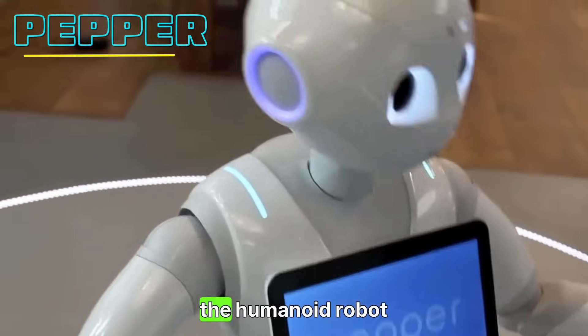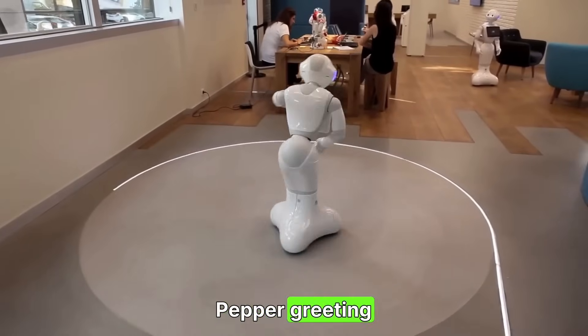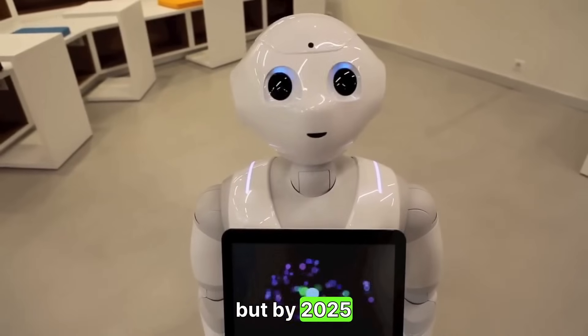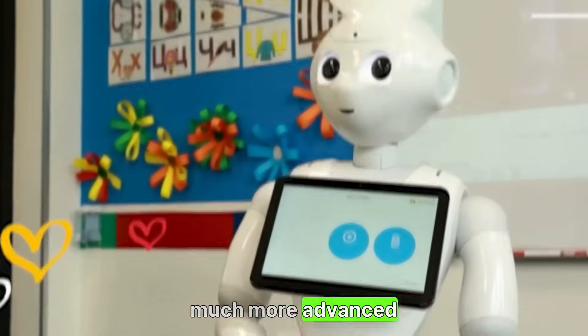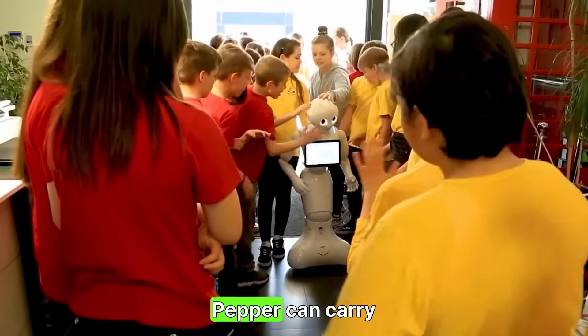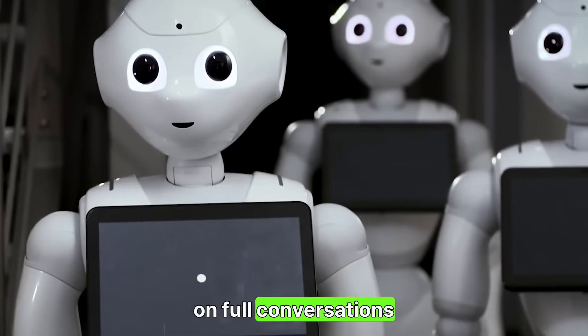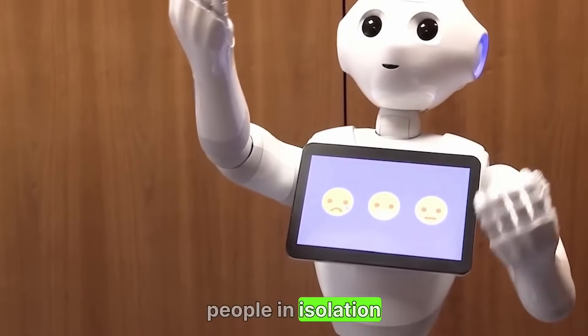Then there's Pepper, the humanoid robot from SoftBank. You've probably seen Pepper greeting customers in retail stores, but by 2025, Pepper's capabilities will be much more advanced. Through natural language processing and emotional AI, Pepper can carry on full conversations, detect moods, and provide companionship to people in isolation.